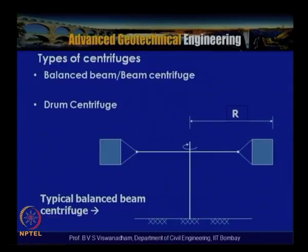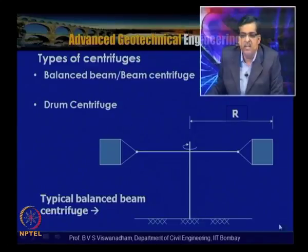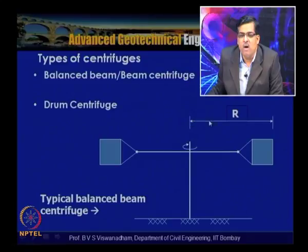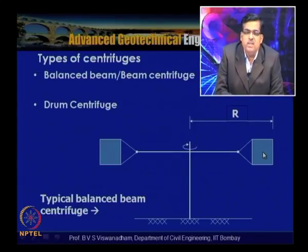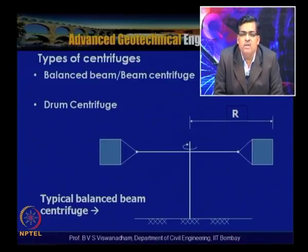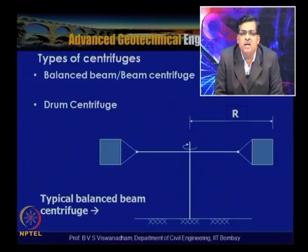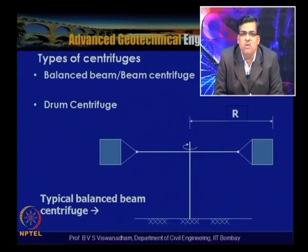A typical balanced beam centrifuge has two baskets of approximately equivalent weight subjected to rotation about a vertical axis in a horizontal plane, where r is the radius. For example, if the machine can carry 20 kN at 100g, the capacity is called 2000 g·kN or 200 g·ton capacity. Capacities of centrifuge equipment are indicated worldwide in g·tons or g·kN — the payload multiplied by the g-level at which that payload is carried.